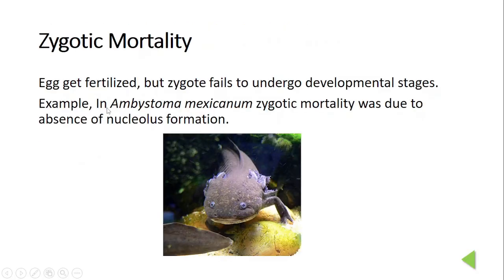Next is zygotic mortality. In this case, the egg gets fertilized but the zygote fails to develop — it does not undergo developmental processes such as cleavage. This may be caused by cytological, genetical, biochemical, or physiological factors. For example, in the axolotl Ambystoma mexicanum, zygotic mortality occurs due to the absence of nucleolus formation, so the zygote fails to undergo cleavage. In some plants like Datura, it was observed that if the zygote is maintained in artificial medium, viable seeds can be produced.